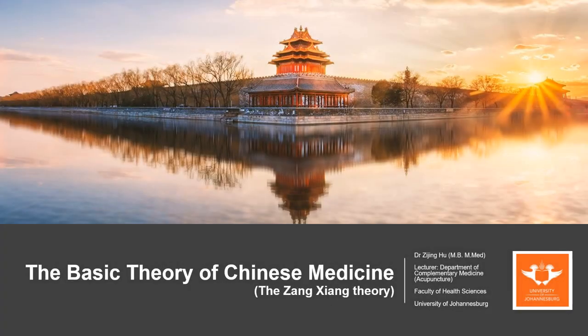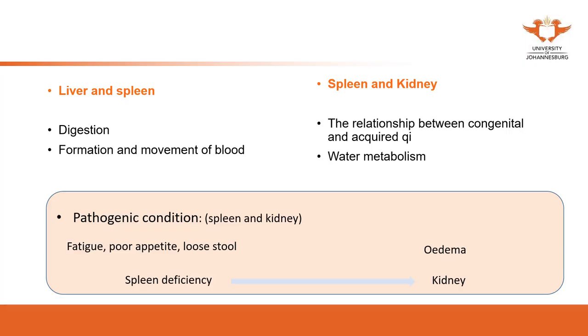Hello everyone. In this video we are going to continue the discussion on the relationship among different organs. The first relationship we're going to introduce is the liver and the spleen.